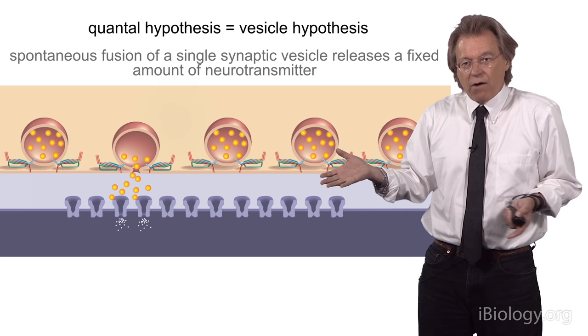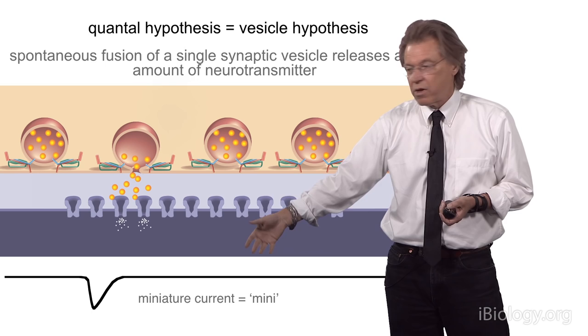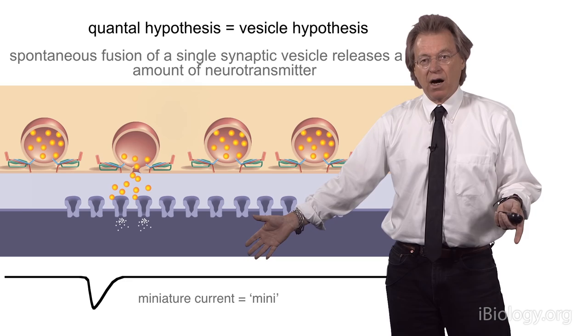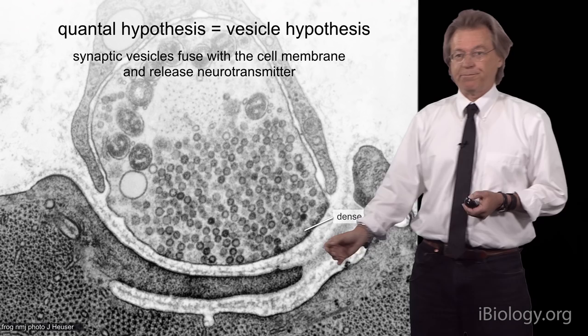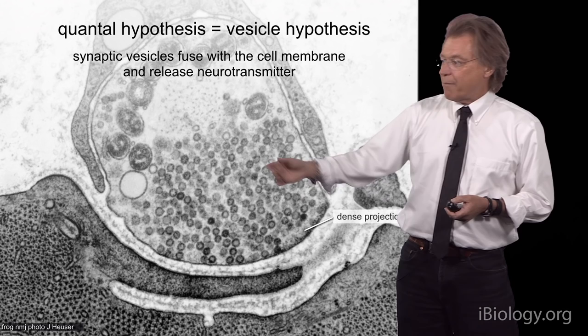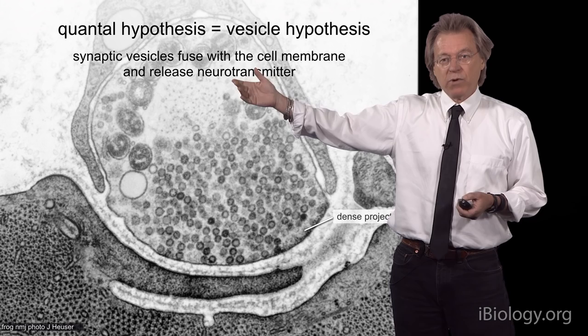It's a depolarization — here we're showing a miniature current — and so these events are called minis. The quantal hypothesis has now become the vesicle hypothesis: the reason there is a quantal response at synapses is because these vesicle fusions contain a fixed amount of neurotransmitter.